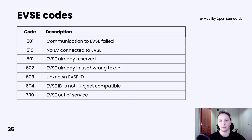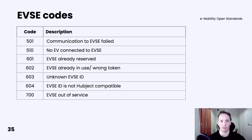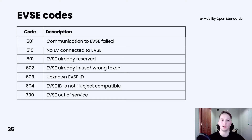Finally, we have EVSE-related codes, which can specify more details about problems with the charging station. For example, we can specify that communication with EVSE has failed, that there is no electric vehicle connected to EVSE, that EVSE is already reserved, that EVSE is already in use, that we received a wrong token, that we don't know the EVSE ID and it is unknown, that the EVSE ID is not object compatible, or that EVSE is out of service.